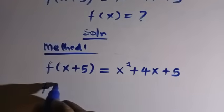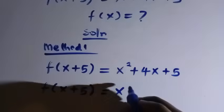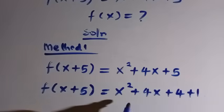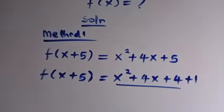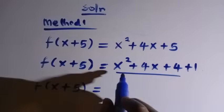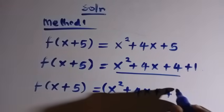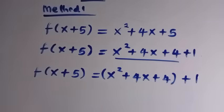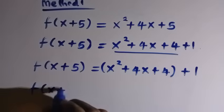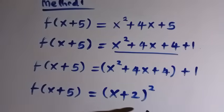What I'm going to do here is write f of x plus 5. Instead of x squared plus 4x plus 5, I'm going to write it as x squared plus 4x plus 4 plus 1 — this is still the same thing. Combining this together, we have f of x plus 5 equals x squared plus 4x plus 4, in brackets, plus 1. Note that x squared plus 4x plus 4 is a perfect square, so the whole bracket becomes x plus 2, all squared, plus 1.